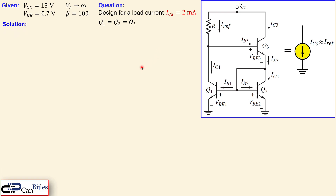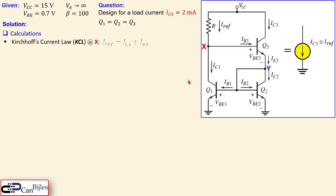For the solution, we start with the calculation. As always, we start with node X and node Y. Applying Kirchhoff's current law at node X, we can say the reference current I_ref splits into IC2, IC1, and IB3. We call this equation number one.